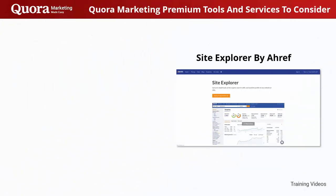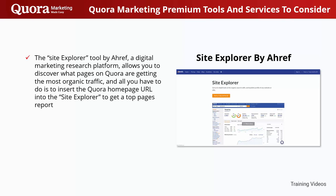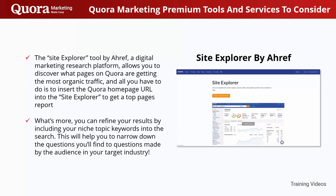Site Explorer by RF is a digital marketing research platform that allows you to discover what pages on Quora are getting the most organic traffic. All you have to do is insert the Quora homepage URL into the Site Explorer to get a top pages report. What's more, you can refine your results by including your niche topic keywords into the search, which will help you narrow down the questions to those made by the audience in your target industry.